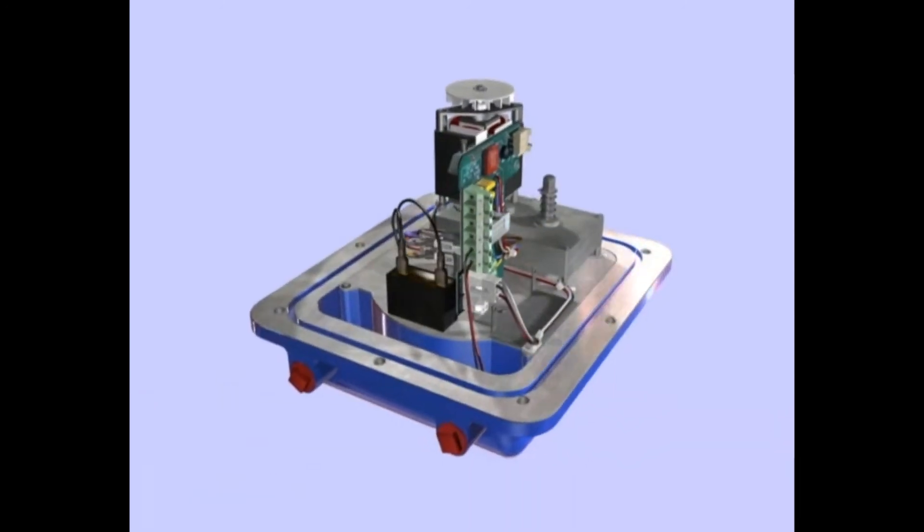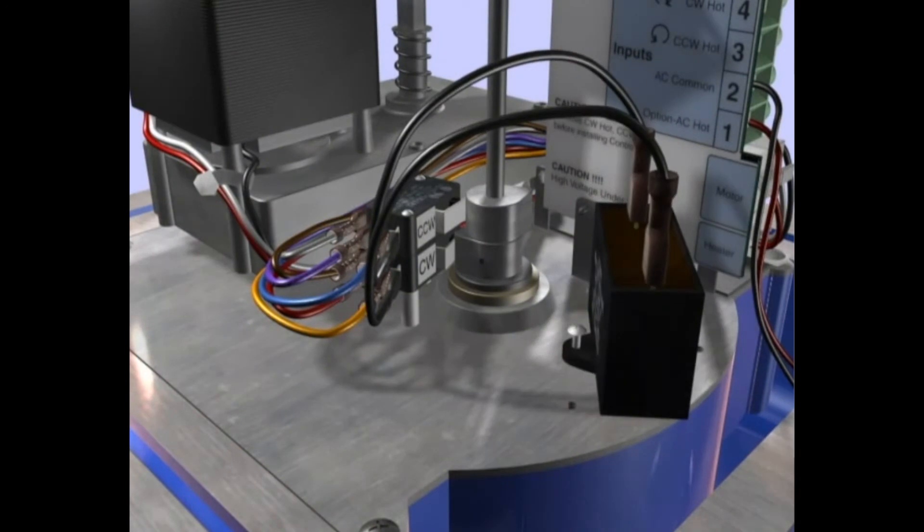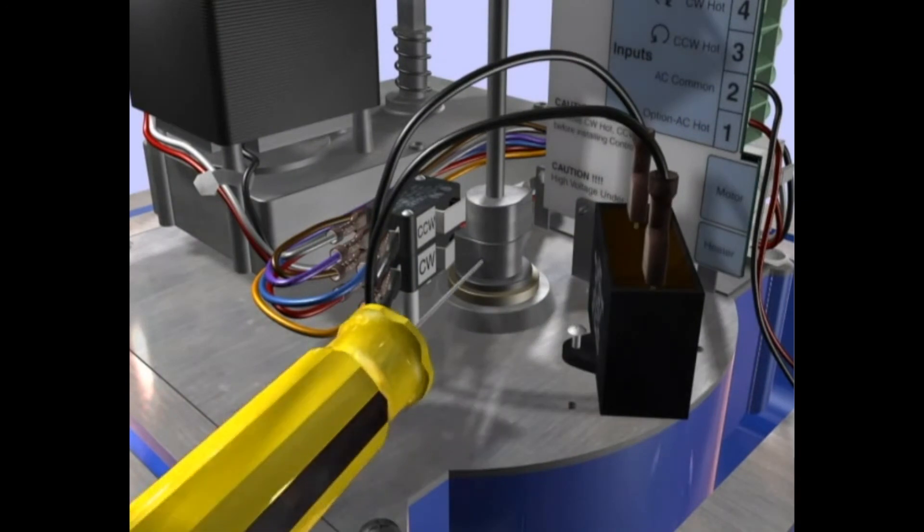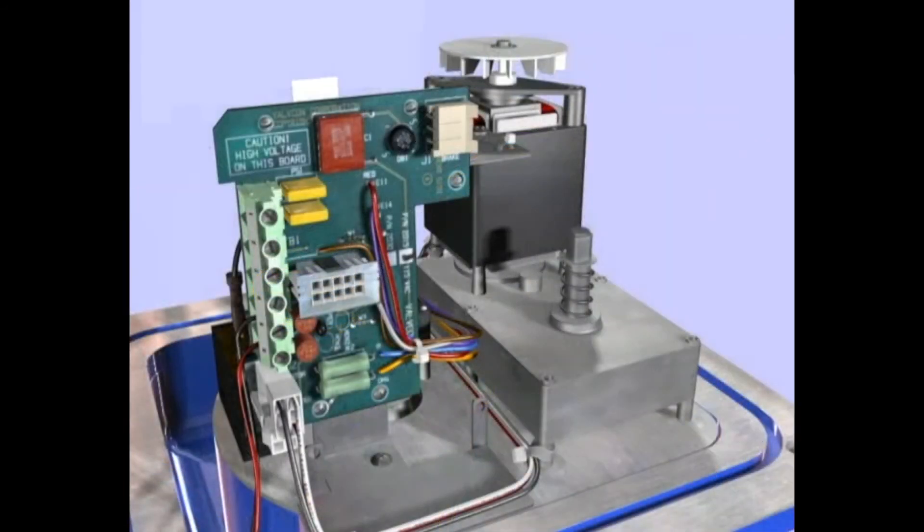The motor construction includes internal thermal protection, which automatically resets when the internal motor temperature cools to a safe operating range. The V-Series electric actuator was designed to allow easy access to the stainless steel cams and end-of-travel switches. The standard board bracket is designed to accept a variety of options and accessories, so no additional brackets are required.